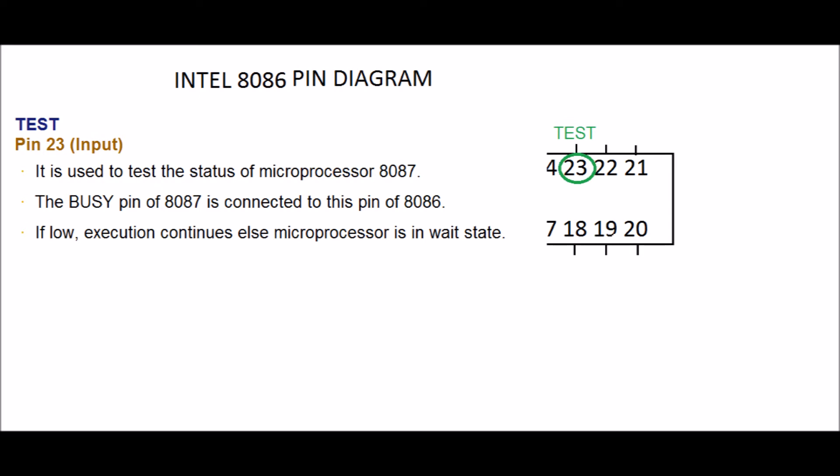The Intel 8087, announced in 1980, was the first x87 floating point coprocessor for the 8086 line of microprocessors. The purpose of the 8087 was to speed up computations for floating point arithmetic, such as addition, subtraction, multiplication, division, and square root. If low, execution continues else microprocessor is in wait state.